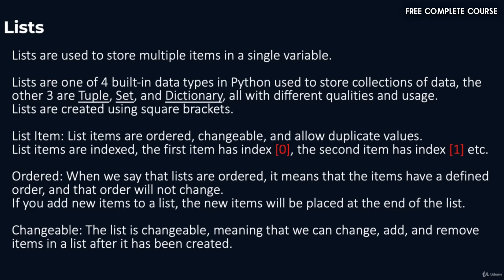Welcome back. In this video we're going to talk about lists. Lists are used to store multiple items in a single variable. Lists are one of the four built-in data types in Python used to store collections of data. The others are tuple, set, and dictionary, all with different qualities and usage. Lists are created using square brackets.